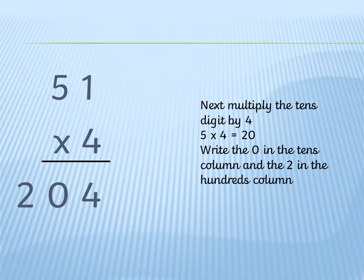Next we multiply the tens number by 4. So we work out 5 times 4, which is of course 20. We put the 0 in the tens column and we put the 2 where the hundreds column would be. So now we know that 51 times 4 equals 204.